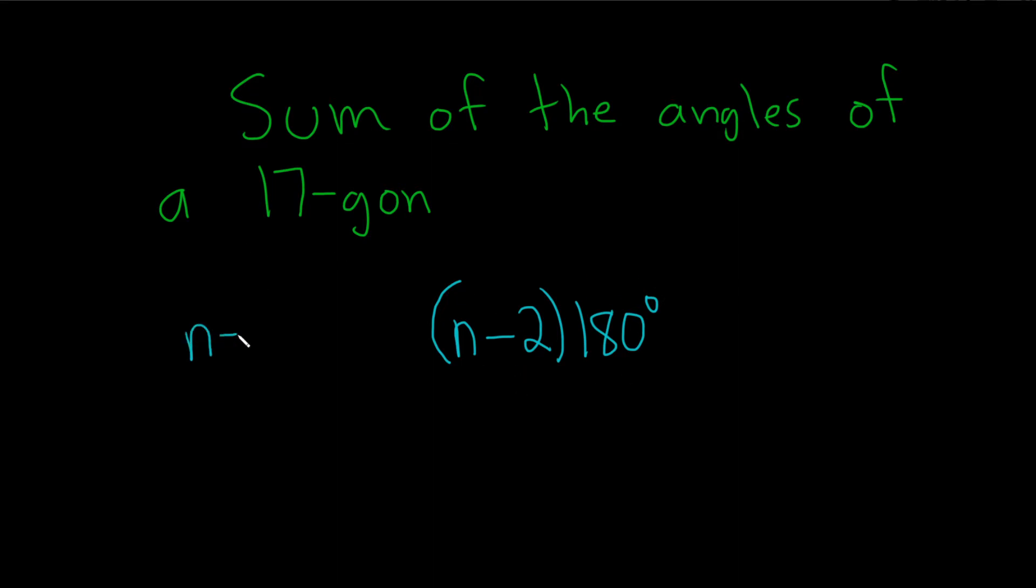So here n is 17. So all we have to do is plug in 17 into this formula. So it's 17 minus 2, and then we still have the 180 degrees.